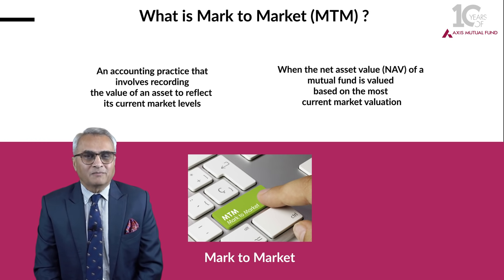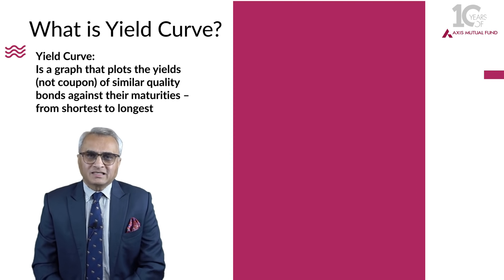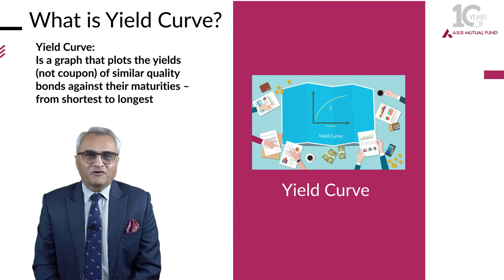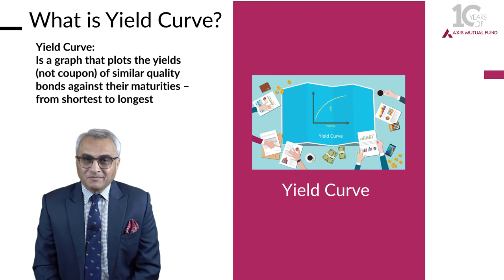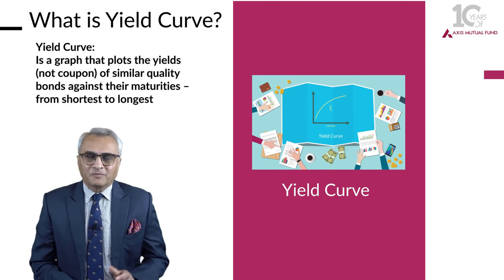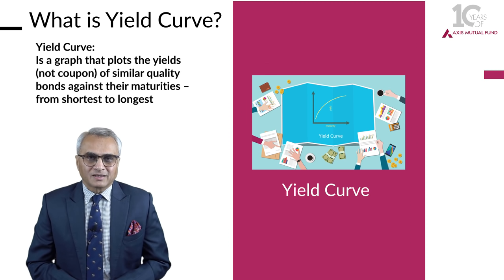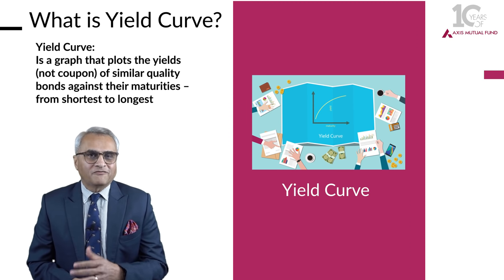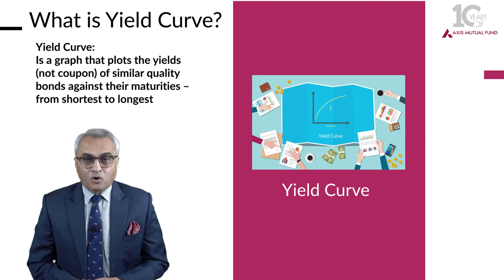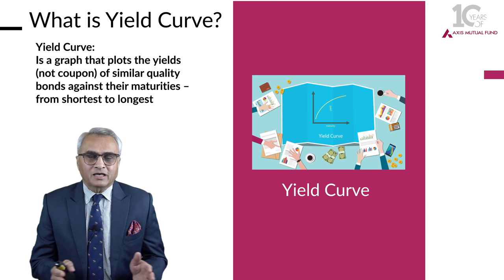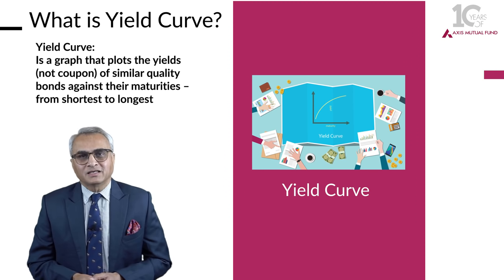What is a yield curve? A yield curve plots a graph of yields — not coupons — of similar quality bonds from its shortest maturity to its longest maturity. There can be a 6-month paper, a 12-month paper, a 5-year paper of similar quality bonds, and once the yields of these are plotted on a graph, that becomes a yield curve.